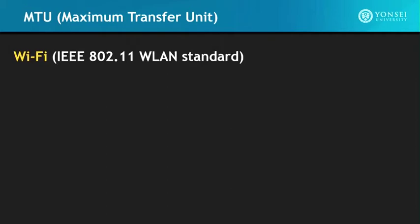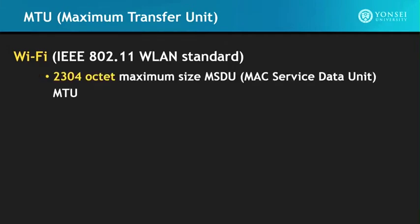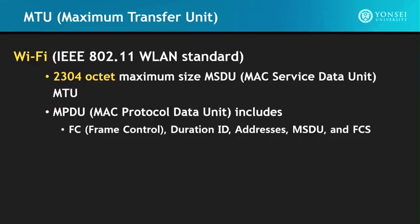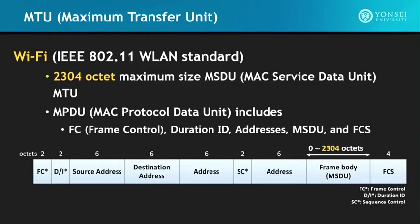For Wi-Fi, the MPDU (MAC Protocol Data Unit) includes frame control, duration ID, addresses, MSDU, and the FCS. In the frame body, it can be 0 to 2,304 octets — that's where the IP packet fits. So therefore the IPv4 or IPv6 packet that goes into a Wi-Fi packet will have a maximum transfer unit (MTU) size of 2,304 octets.